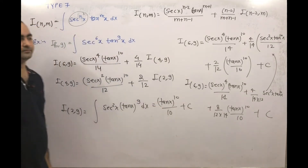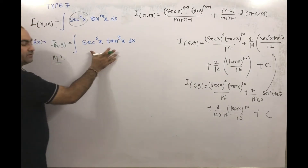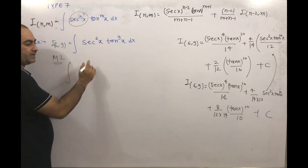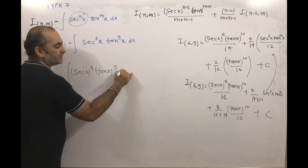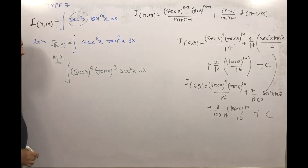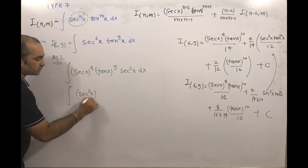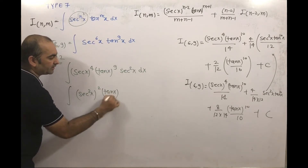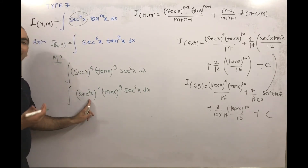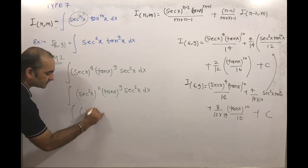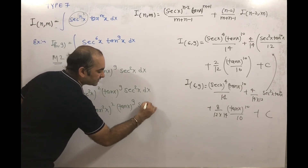Next we are discussing Method 2, which is a little simpler. What we will do: integration of secant power 6 x, we can write as secant power 4 into tan x to the power 9 into secant squared x dx. So secant x to the power 4 we are writing as secant squared x whole squared, and secant squared x we are writing as 1 plus tan squared x.